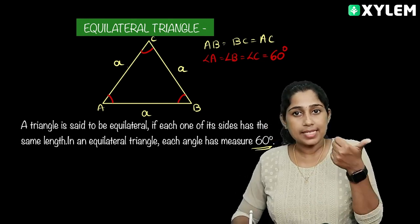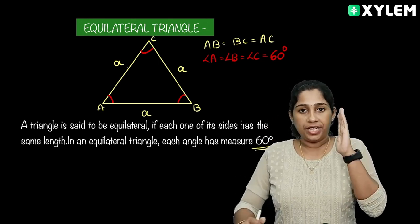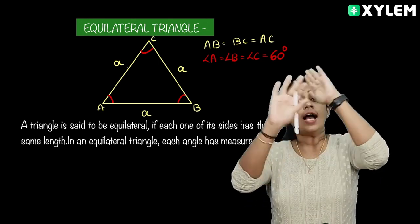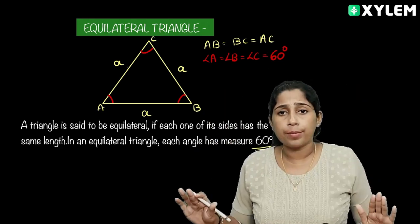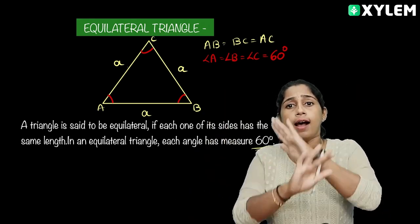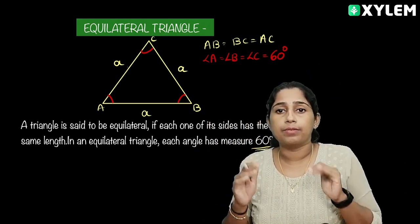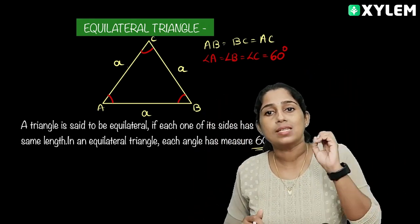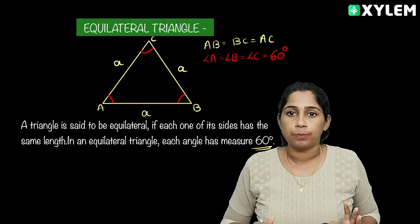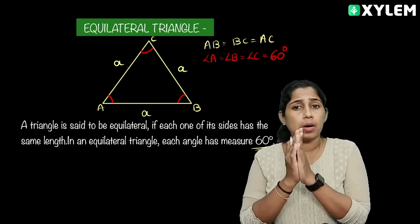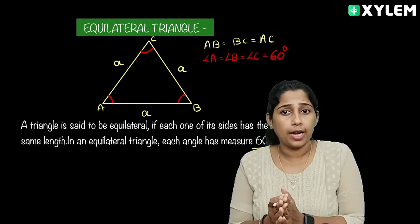One equilateral triangle has all sides and angles equal, with each angle equal to 60 degrees. This equilateral triangle has the same property for all sides and angles.